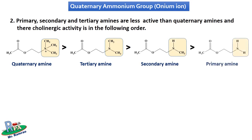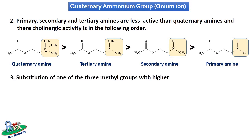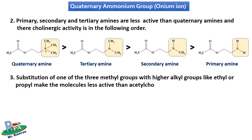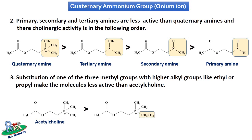The third point is that substitution of one of the three methyl groups with higher alkyl groups like ethyl or propyl makes the molecule less active than acetylcholine. That means as the length of the alkyl group on nitrogen increases, it decreases the cholinergic activity, as shown in the structures.